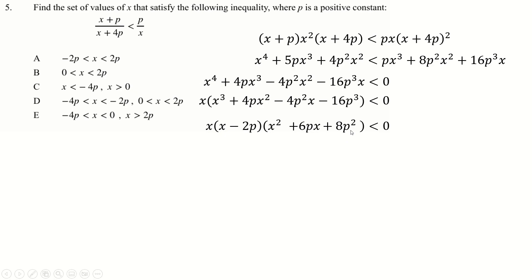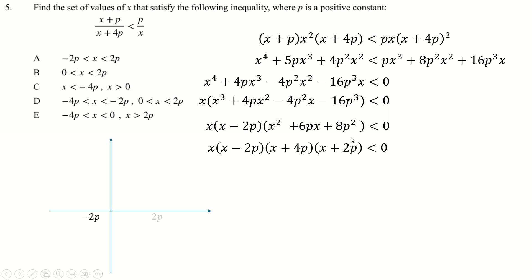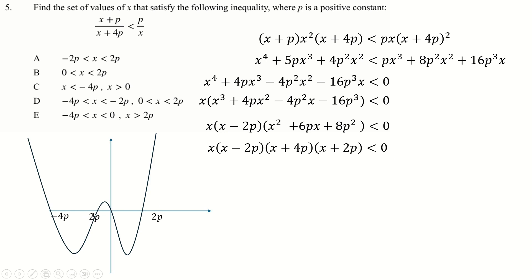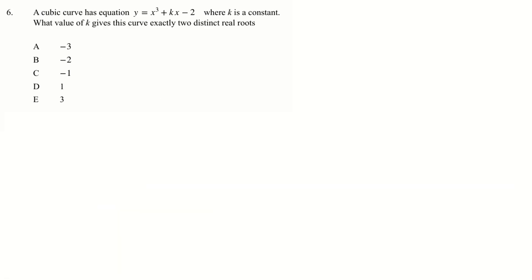This also factorizes to (x + 4p)(x + 2p), so roots at 0, 2p, minus 4p, and minus 2p. Drawing the graph just like before, and looking to be less than zero, the answer is x in (minus 4p, minus 2p) and x in (0, 2p).